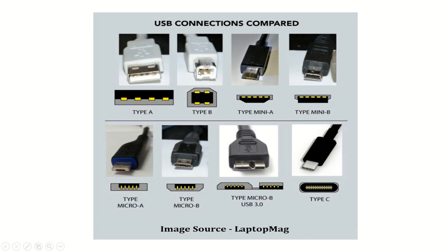The Type B connector is an older connector that's not nearly used as often nowadays. It's almost square at one end and usually plugs into a printer or similar device. Other than these uses, it's been largely overtaken by newer standards. The initial USB Type A and Type B connectors had 4 pins, and now the latest generation USB Type A and Type B have 9 pins. The increase in number of pins allows the device to transmit data at the speeds that the latest standards enable.